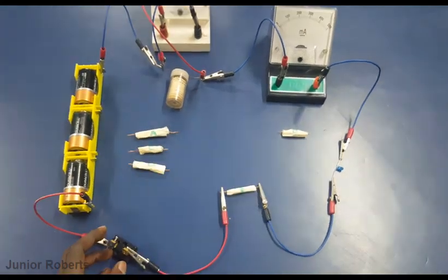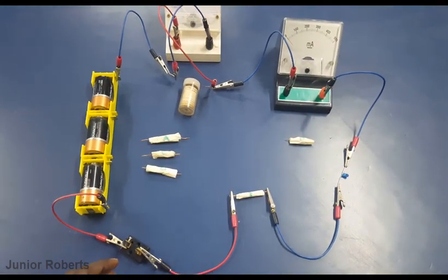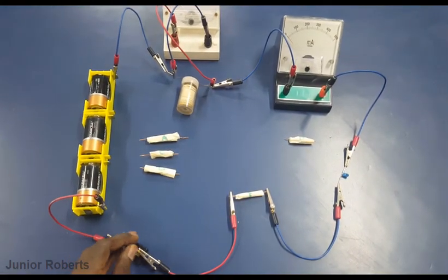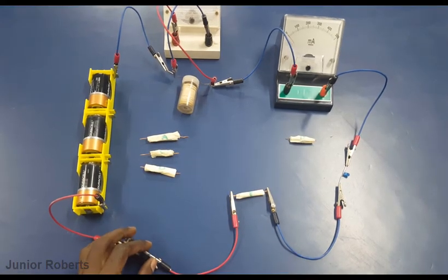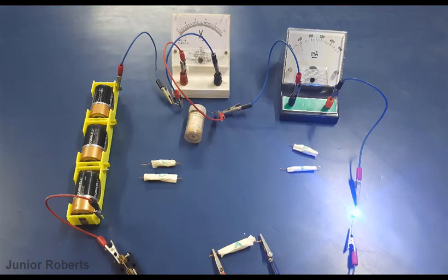So let's quickly move on to component E and see what happens. Okay, so here we have component E, and if we close the switch we do not get any light. So it therefore means that component E is not a conductor, so in other words it's an insulator.